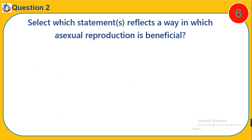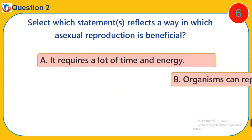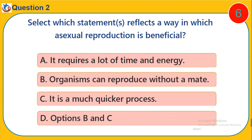Question 2. Select which statement reflects a way in which asexual reproduction is beneficial. A. It requires a lot of time and energy. B. Organisms can reproduce without a mate. C. It is a much quicker process. D. Options B and C.